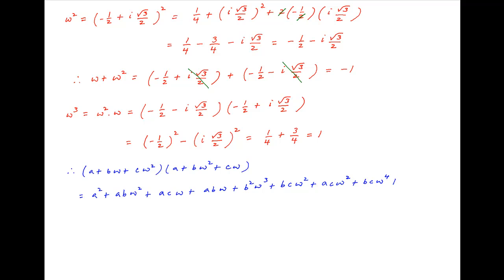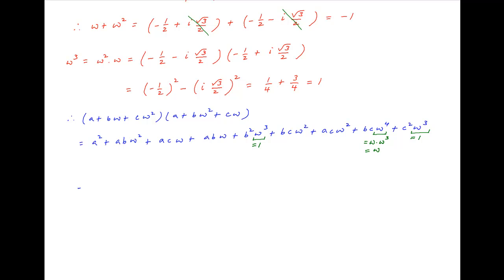Expanding this product and collecting terms, we get contributions including c square times omega cube. Now omega cube is equal to 1 as determined above, and omega raised to the power 4, which is equal to omega cube times omega, is equal to omega. Therefore, this expression is equal to a square plus ab omega square plus ac omega plus ab omega plus b square plus bc omega square plus ac omega square plus bc omega plus c square.